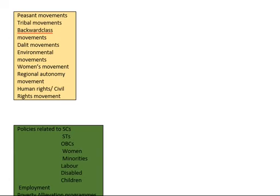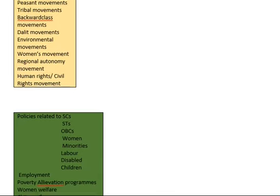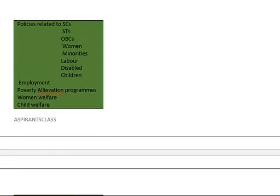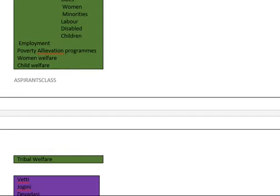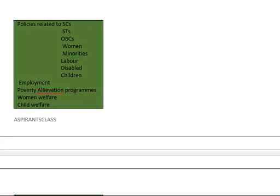Unit 3 has 13 topics including peasant movements, tribal movements, backward class movements, Dalit movements, environmental movements, women's movements, regional autonomy movements, and human rights or civil rights movements. Unit 4 covers policies related to SCs, STs, OBCs, women, minorities, labor, disabled, children, employment, poverty alleviation programs, women welfare, and child welfare.